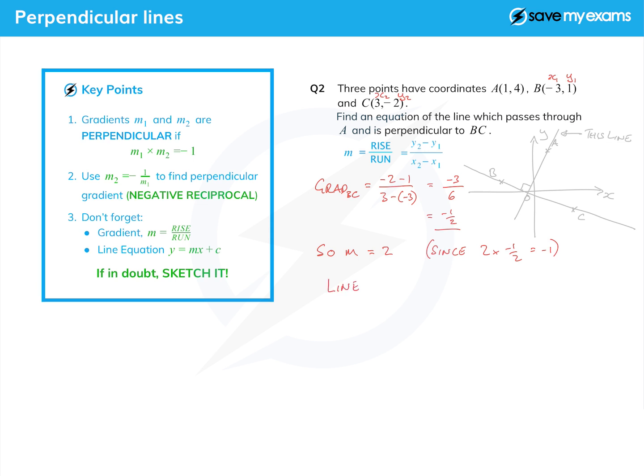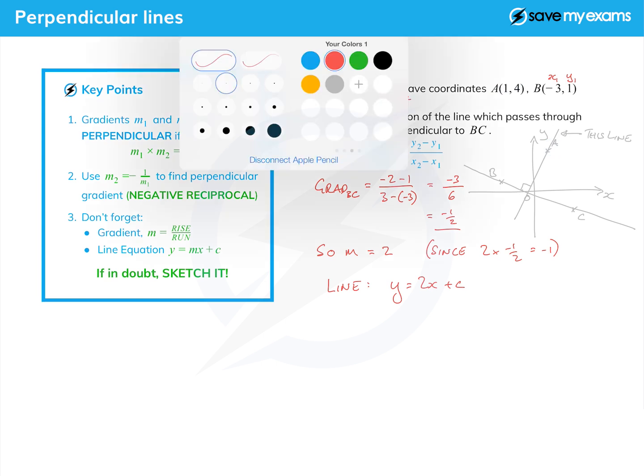So the equation of the line in y equals mx plus c form is y equals 2x plus c. And how do we find the c? Well we use the point A that's the point we're given.